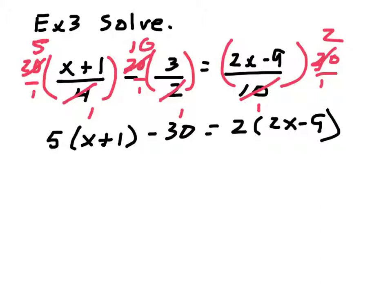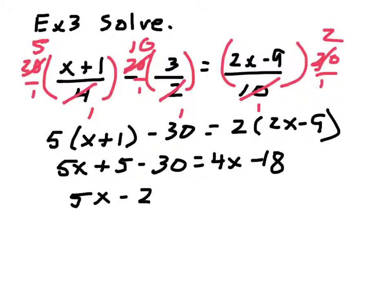Now, I'm going to distribute the 5, so I have 5x plus 5 minus the 30 equals 4x minus 18. Now, simplify the left side. I have 5x minus 25 equals 4x minus 18. Now, this time, I'll pick on the small one, which is the 4x. So, subtract 4x.